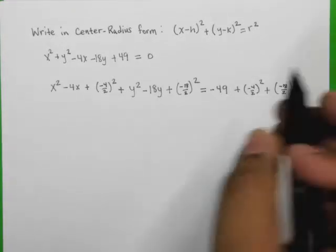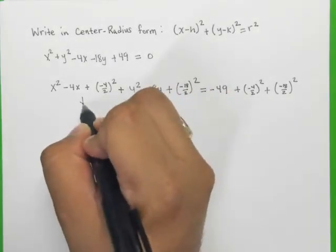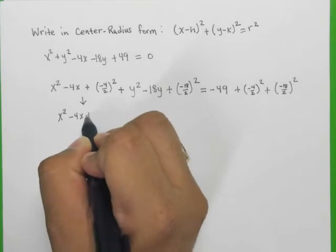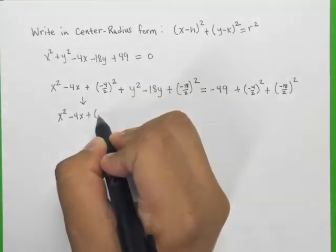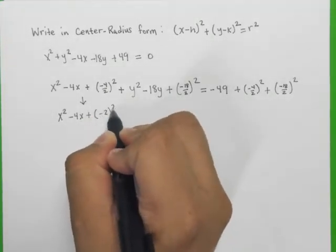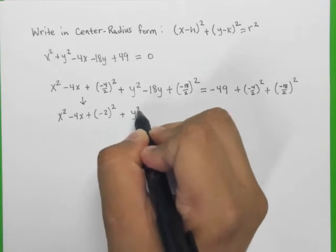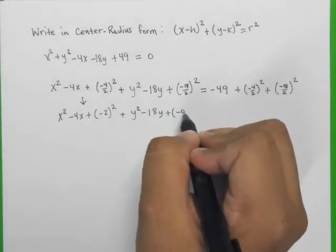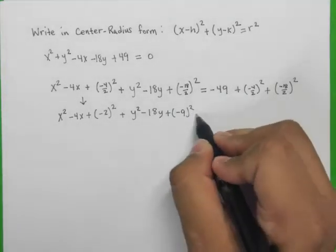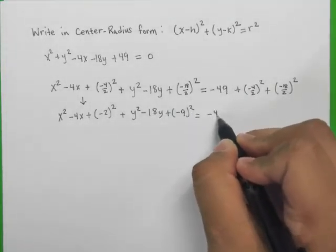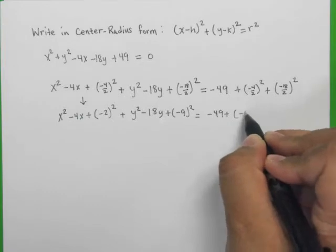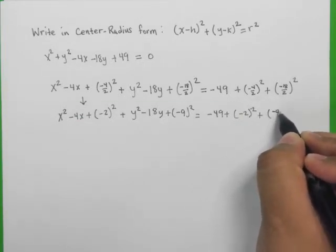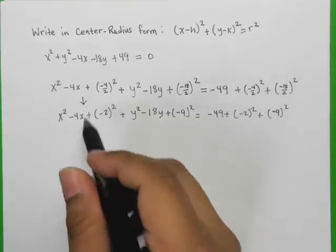All right, perfect. So now let me just bring this down, and I'm going to have x-square minus 4x plus, and in this case negative 4 over 2 is negative 2 square, plus y-square minus 18y plus, and in this case negative 9 square, and over here we're going to have negative 49 plus negative 2 square plus a negative 9 square.